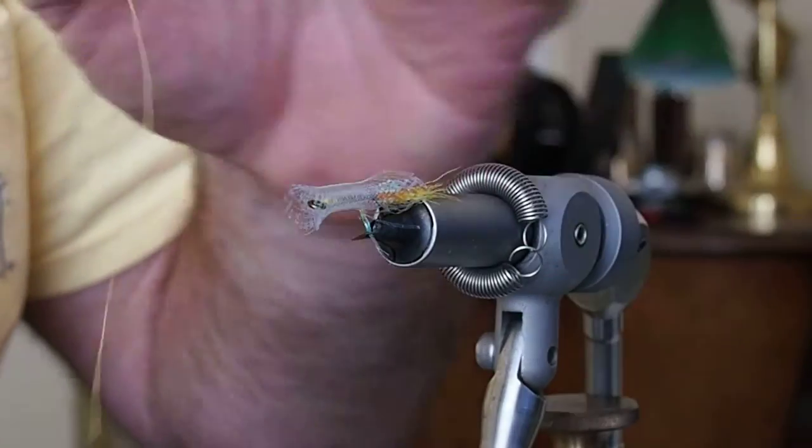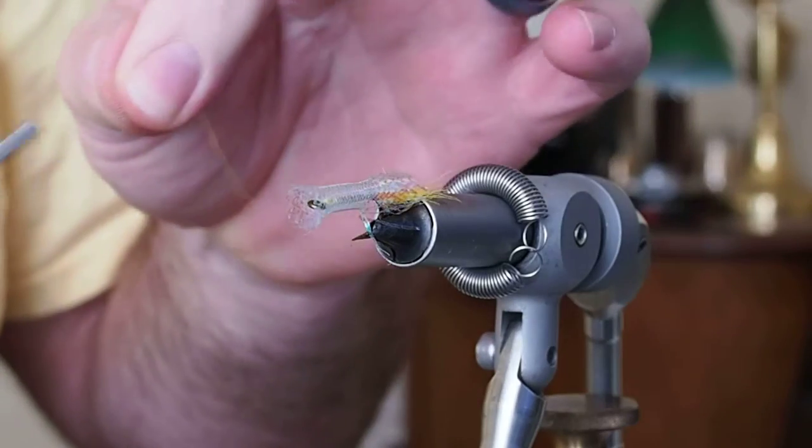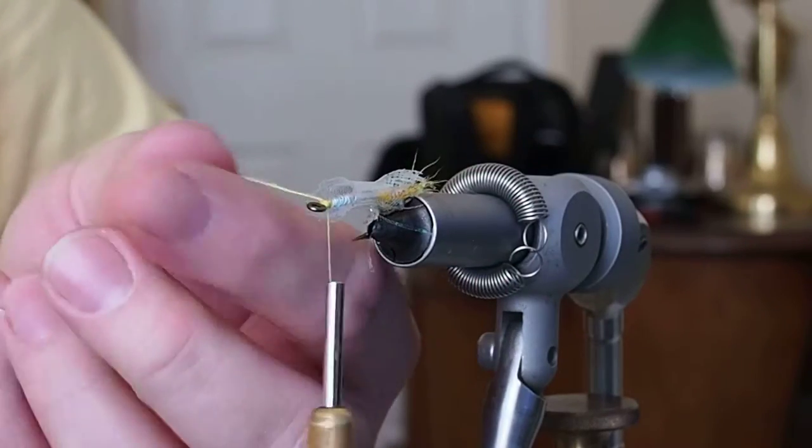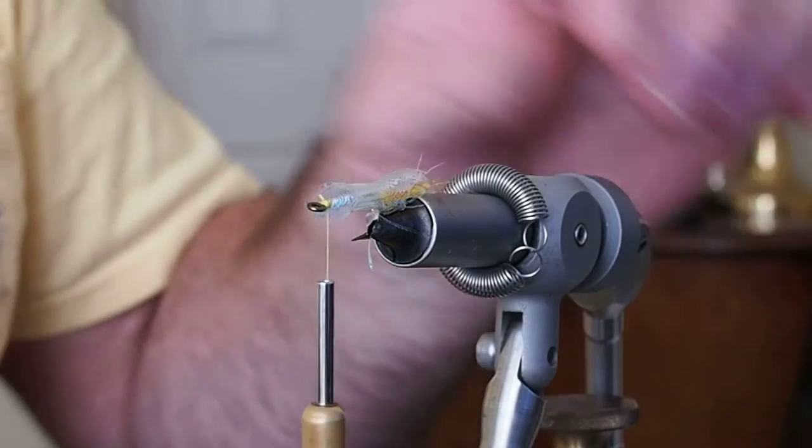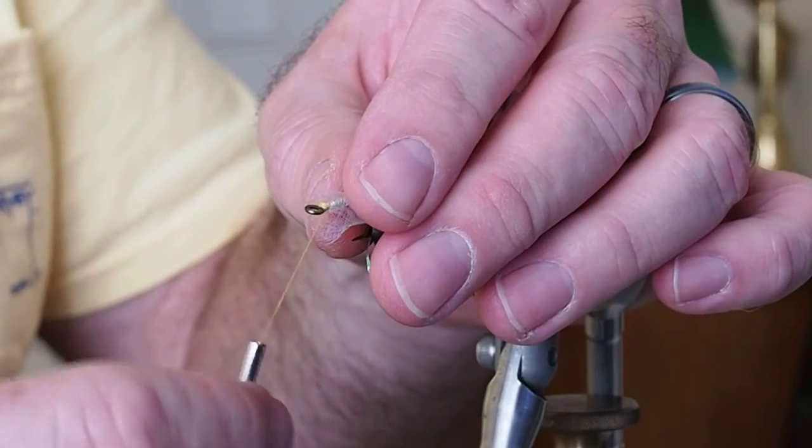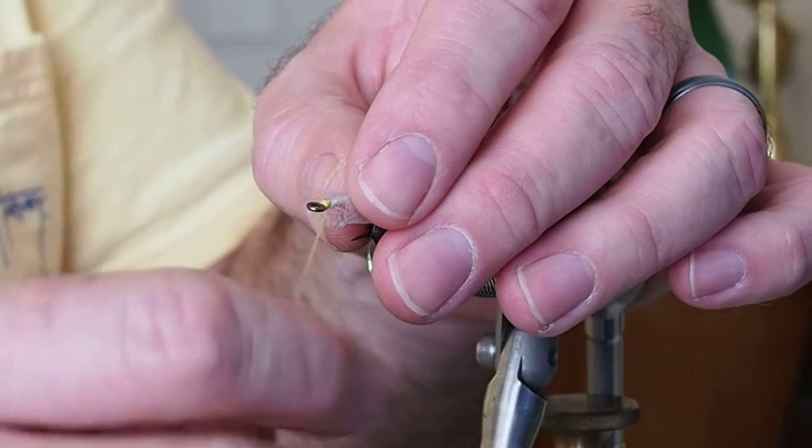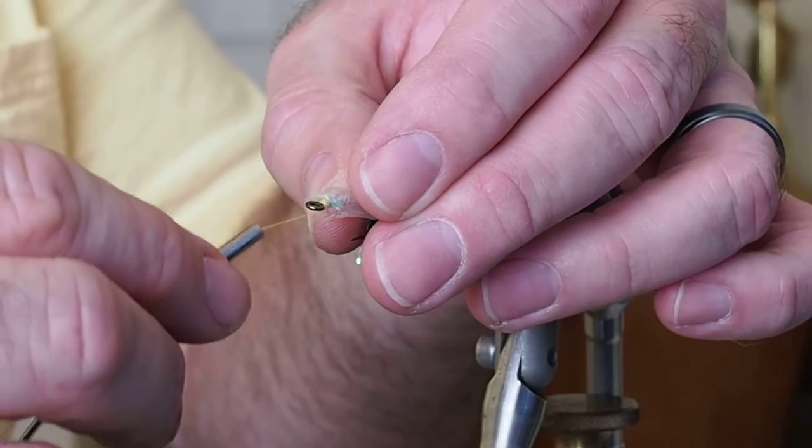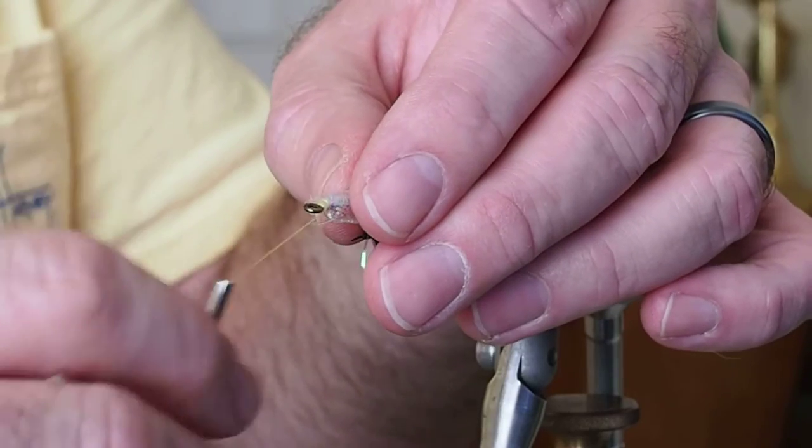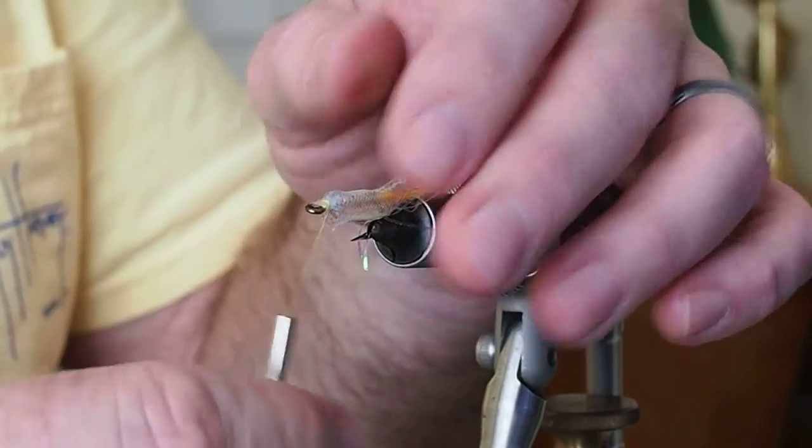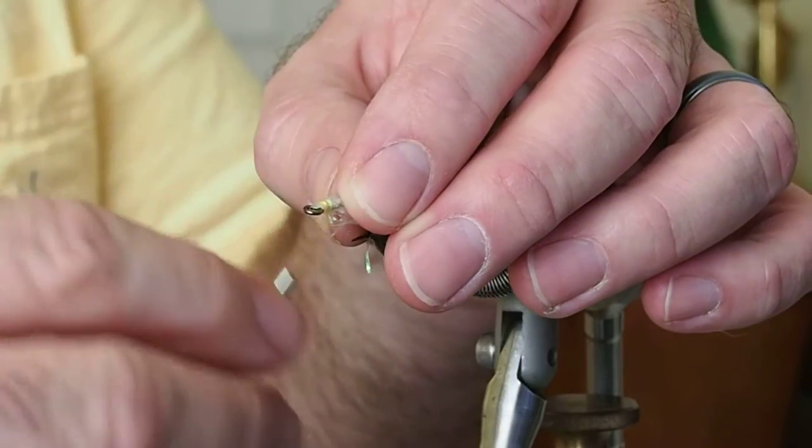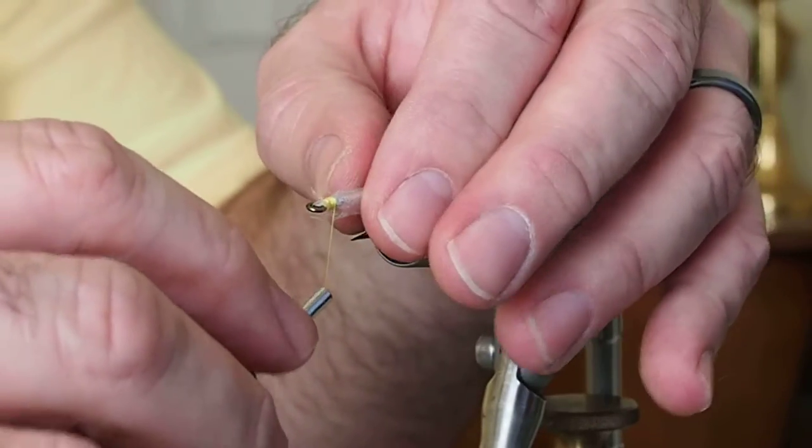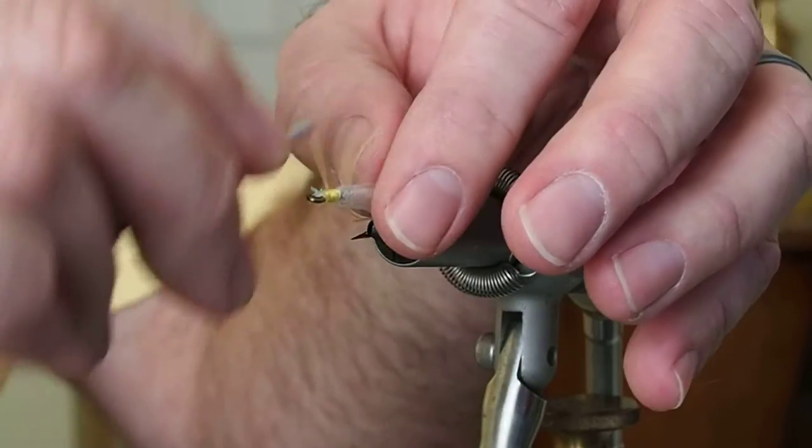Alright, next we want to reattach our thread and capture your mylar body. This can always be a little tricky. Just make a few counter turns on your bobbin, helps grab all those little braids. There we are.